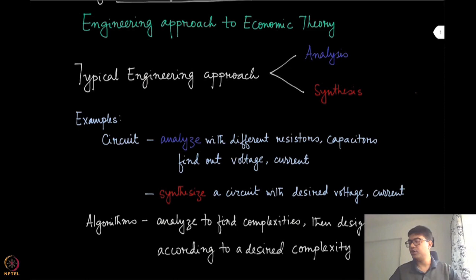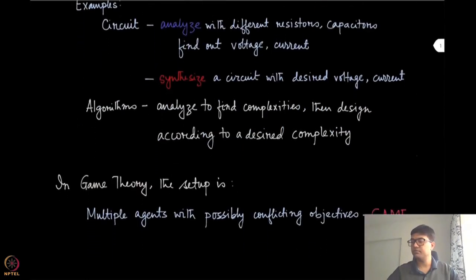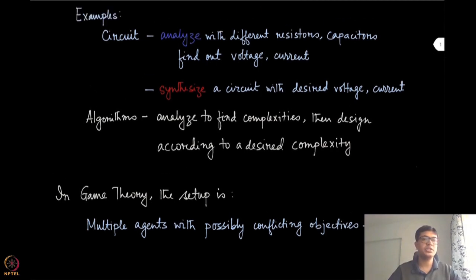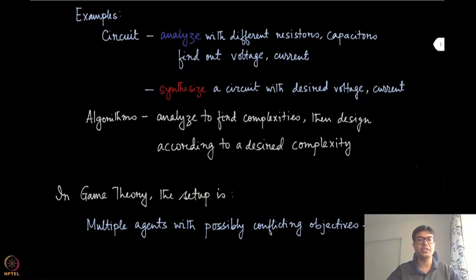Similarly, in algorithm courses, you are given a specific algorithm and you are trying to analyze it to find out different parameters and metrics of that algorithm — for instance, complexity is one such metric. And in the design part, you are trying to design an algorithm which will give a certain desired complexity.